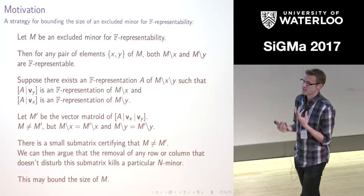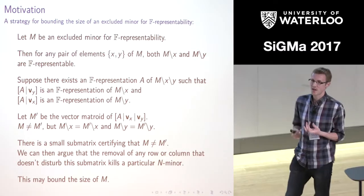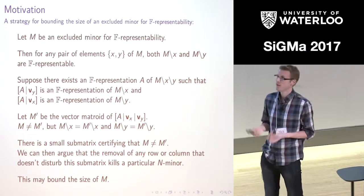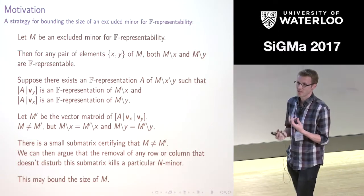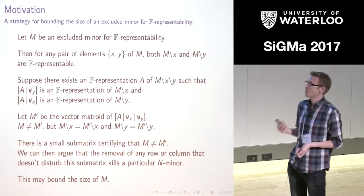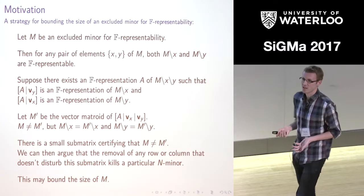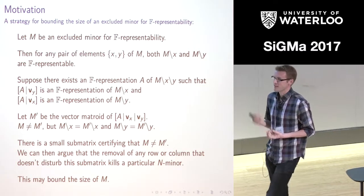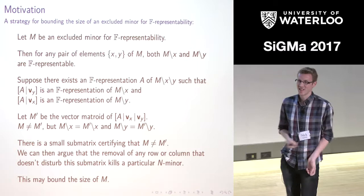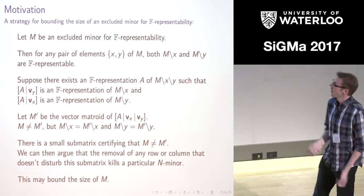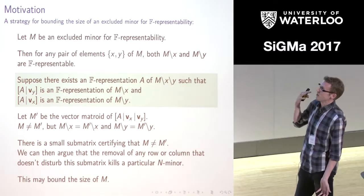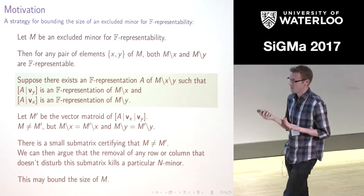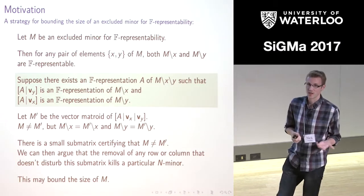What we can do is say that there's some small sub-matrix that certifies that M prime and M are different. By pivoting, we can get this down to some small sub-matrix. Then we can ask about what happens if you were to move some row or column that doesn't disturb this sub-matrix — this gives us a lot of information we can try to use to bound the size of M. But so far I've just supposed that we've got these nice overlaying representations, so the first thing I want to say is: when can we actually assure that we can do this?